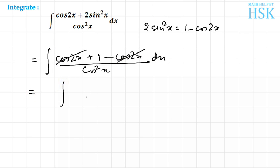I'm going to get this as 1 upon cos squared x. Look what we got: this big term is equal to just 1 upon cos squared x. This can be written as sec squared x.